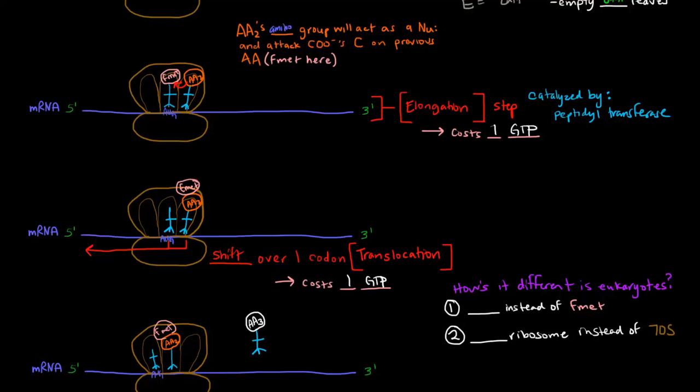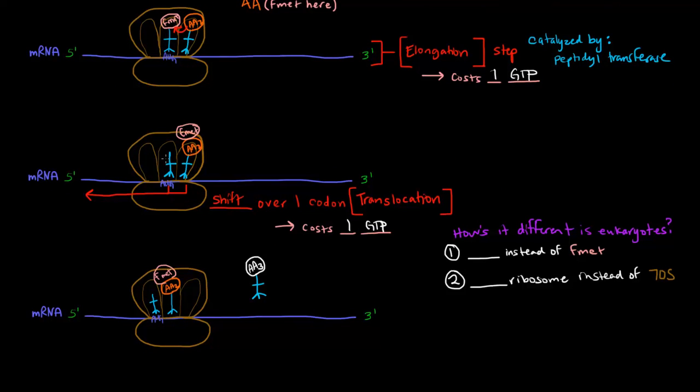The empty tRNA is now in the E site and ready to exit. What's left is the existing polypeptide chain in the P site, and the next amino acid is ready to bind at the A site. We're back to where we started, so the process can repeat as many times as necessary to form the peptide chain.